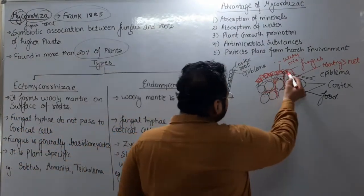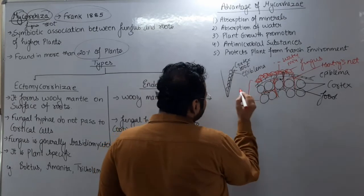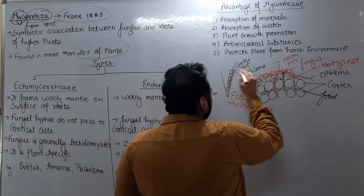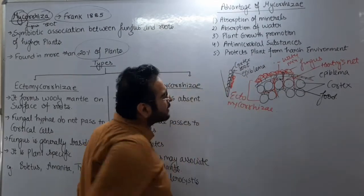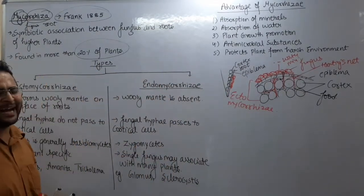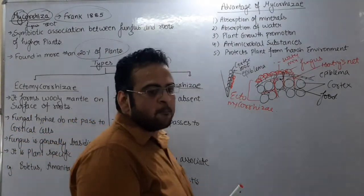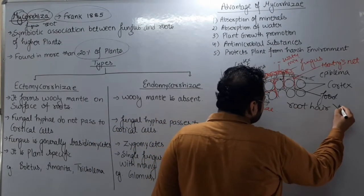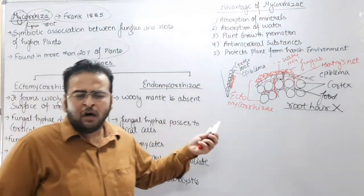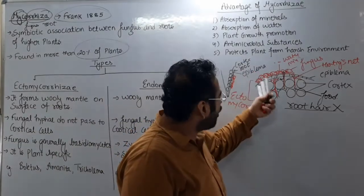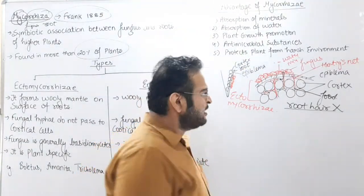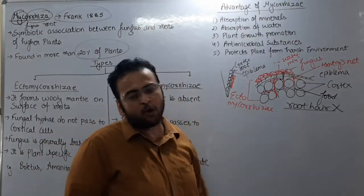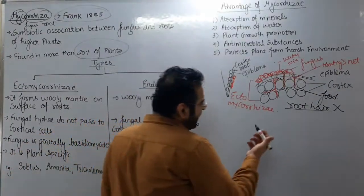Is case mein fungus ka zyada tar hissa on the surface of root dekha jayega, isliye aisi fungus aur root ko kaha jata hai ectomycorrhiza. Agar fungus zyada bahar ki taraf ho aur kam andar ki taraf ho to kehlayegi ectomycorrhiza. Is case mein plant ko ek aur fayda hoga — plant ko root hair banane ki zaroorat nahi paregi. To plant ko do fayde mile: water aur minerals absorb kar ke diye gaye, aur root hair ki bhi zaroorat khatam ho gayi, aur saath protection bhi milti hai.